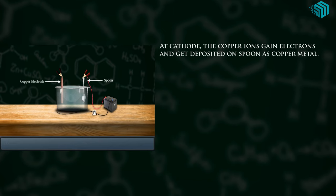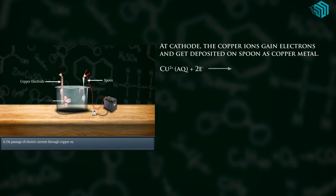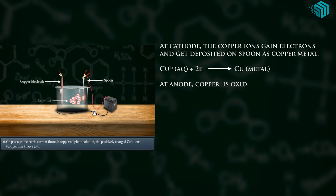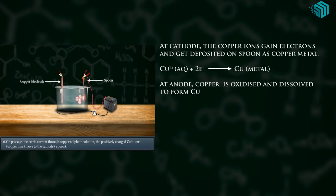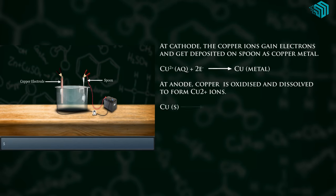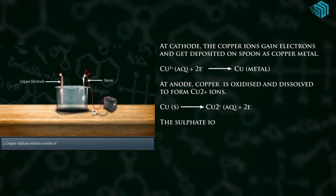Cu²⁺(aq) + 2e⁻ → Cu(metal). At the anode, copper is oxidized and dissolved to form Cu²⁺ ions: Cu(s) → Cu²⁺(aq) + 2e⁻.